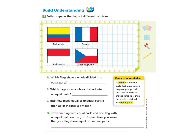Seth compares the flags of different countries. We have four flags inside the box: Colombia, France, Indonesia, and the Czech Republic. We will look at Part A: Which flags show a whole divided into equal parts? A whole is all the parts that make up one shape or group. If all the parts of a whole are the same size, the whole is divided into equal parts.